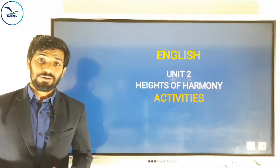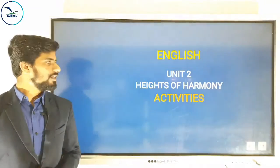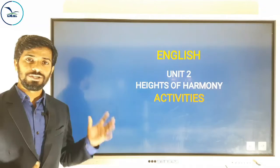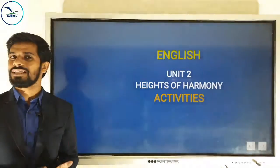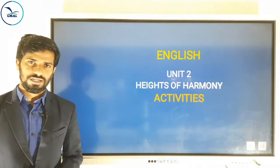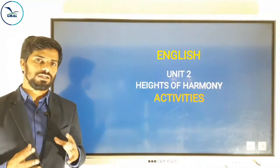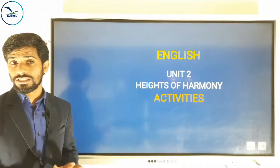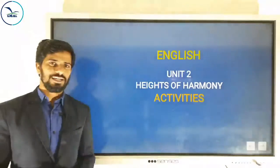Hi everybody, how are you all today? We are going to learn the activities in the second unit, 'The Heights of Harmony.' We have completed the three chapters in the unit: the first one, the poem 'Mending Wall,' the second one, the story 'Amigo Brothers,' and the third one, 'The Art of Truth.' We are going to discuss all the activities that come after these chapters. Some activities we had already discussed along with the chapters; the remaining activities will be discussed here. The whole class will be based on the activities in the unit. You will have to listen carefully and do the works that I assign in between. Okay, let's go.